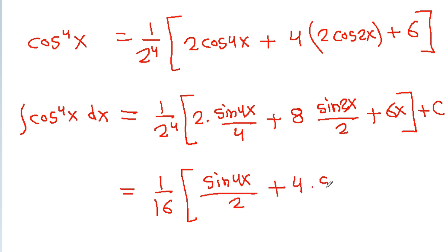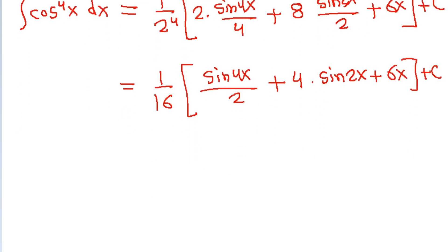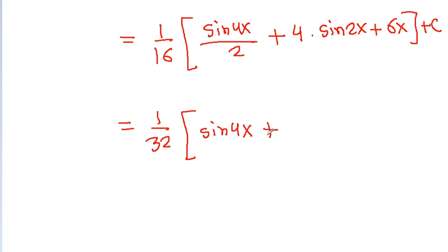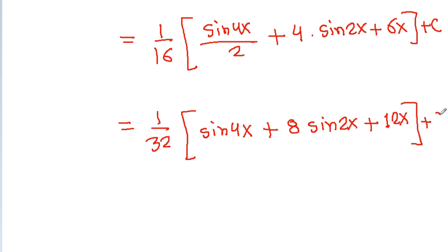This gives (1/16)(sin4x/2 + 4sin2x + 6x) + C. Multiplying and dividing by 2 gives (1/32)(2sin4x + 8sin2x + 12x) + C, which is the same result as the first method. So the integral of cos⁴x dx equals (1/32)(sin4x + 8sin2x + 12x) + C.